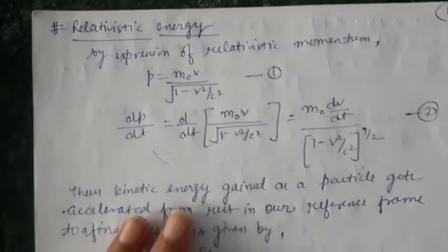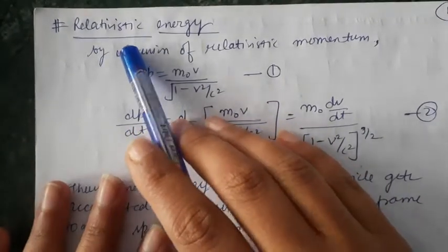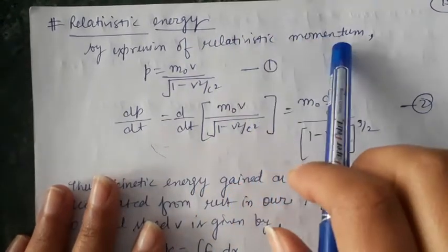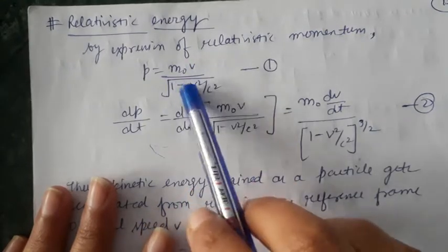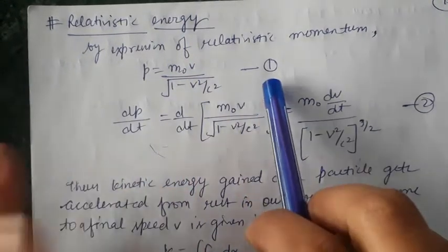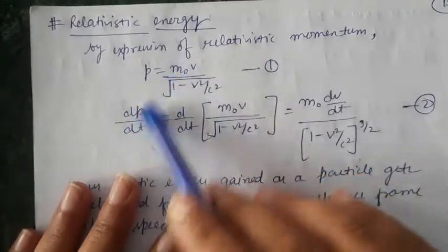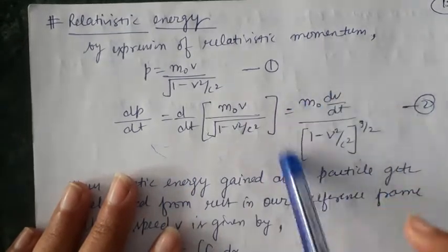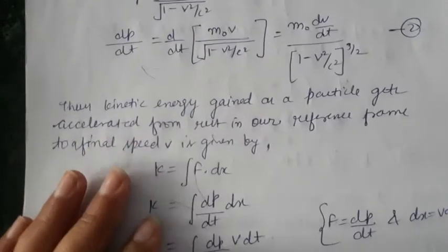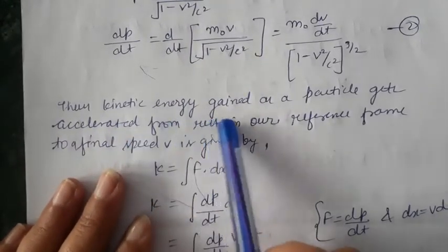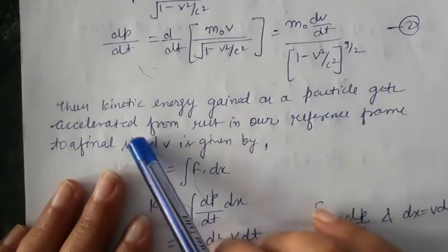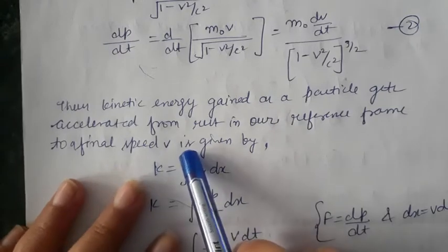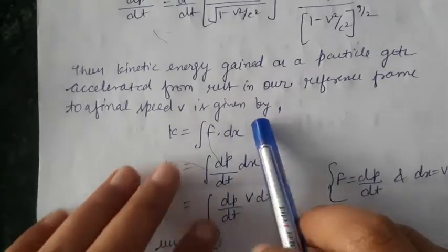Next, moving to the related article on relativistic energy. By the expression of relativistic momentum, p = m₀v / √(1 − v²/c²), which is equation number 1, we compute the rate of change of momentum: dP/dt = d/dt of that whole expression. This gives equation number 2. The kinetic energy gained as a particle is accelerated from rest to a final speed v is given by K.